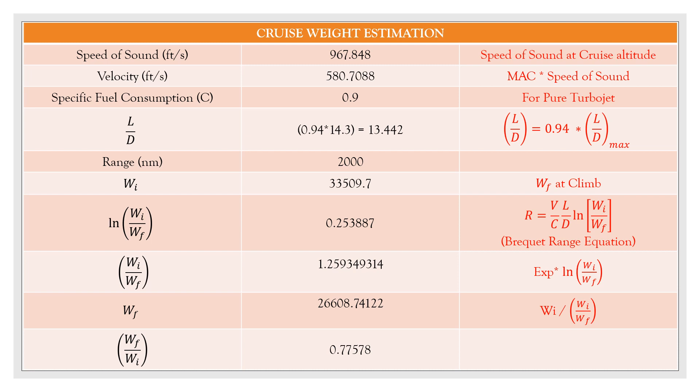A range of 2000 nautical miles is considered and WI, the weight at this initial phase will be the WF at climb that is around 33,509.7. And an important factor that needs to be considered is speed of sound, that is the speed of sound at the cruise altitude desired for the particular aircraft. And subsequent calculations using the range equation can be made and the final weight by initial weight value can be found as 0.77578.